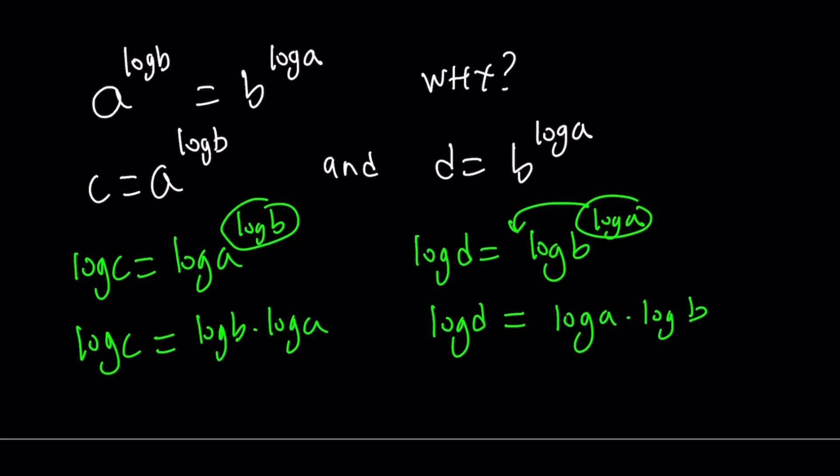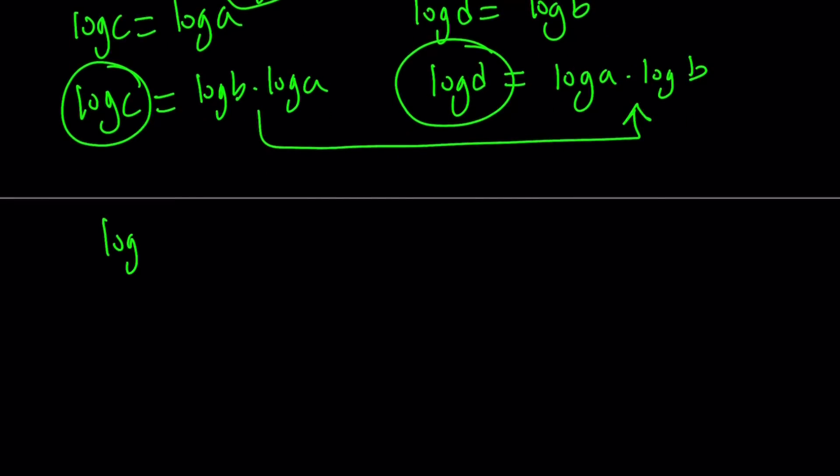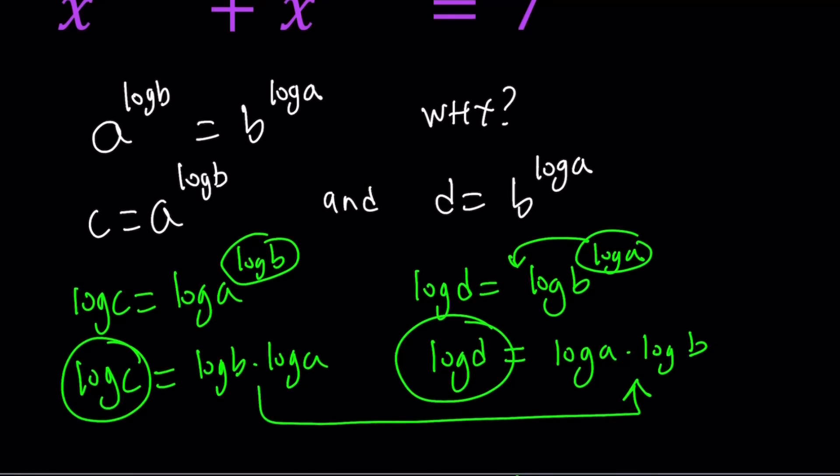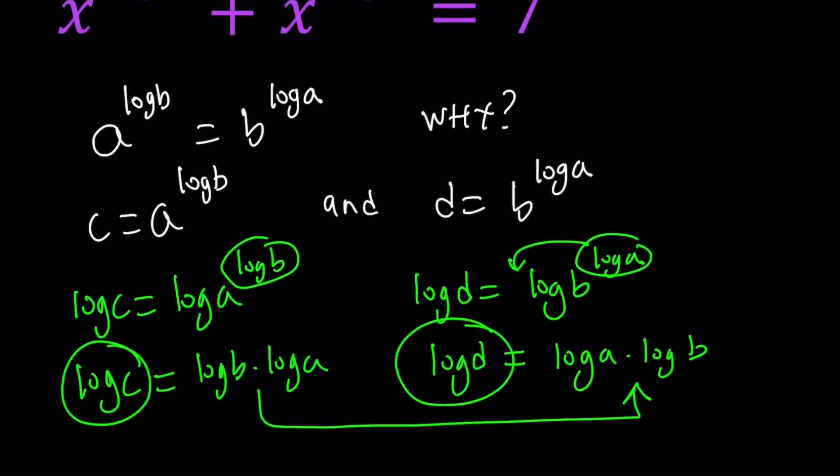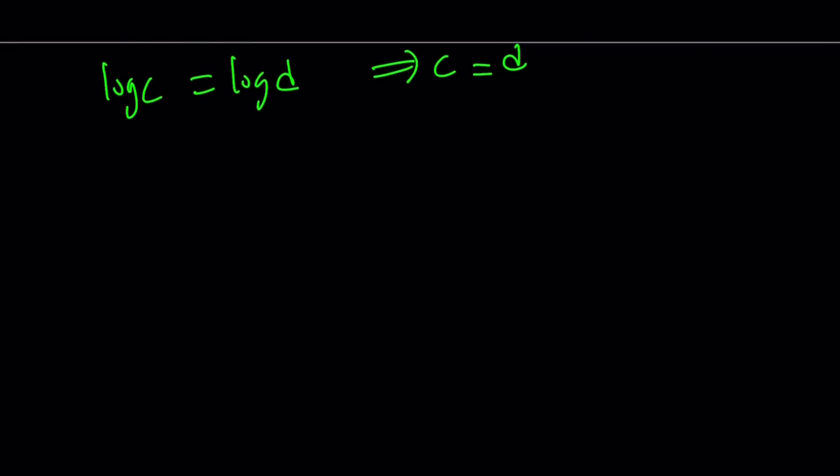They just commute, right? So they're equal. Since they're equal, that implies log c equals log d, and that implies c equals d, because log function is one to one. So that just proves that a to the power log b and b to the power log a are the same thing. We can just switch them around. How does that help us in our equation?